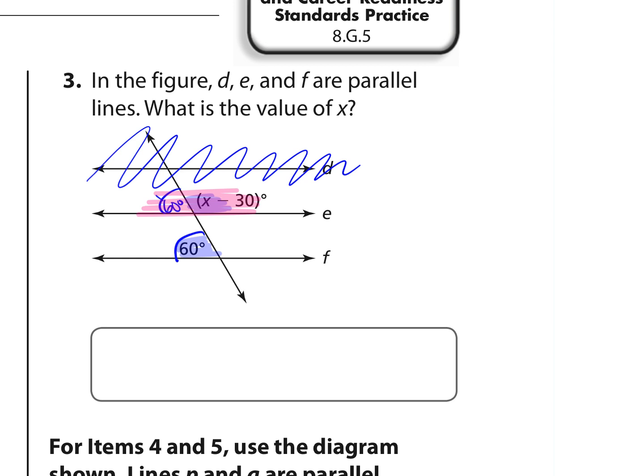So I'm going to add them together and say, 60 plus x minus 30 equals 180 degrees. So I'm going to solve this for x, which is what it's looking for. So 60 minus 30 is 30. So we get x plus 30 is 180 degrees. We want x by itself, so we'll subtract 30 from both sides of this equation. And we get that x is 150, which means that we have solved for x. And we can go back and double check. If we plugged in 150 for x, 150 minus 30 is 120, and that is supplementary to 60 degrees.